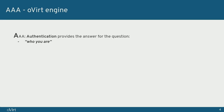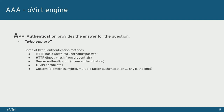The first A stands for authentication, which provides the answer to the question: who you are. Because oVirt engine is a web-based application, I'm going to focus mainly on web-based authentication methods. You might already be familiar with HTTP authentication, which comes in two different flavors: the basic one, where plain usernames and passwords are sent over the network, and the digest one, where the password and username are hashed and the result of the hash function is used.